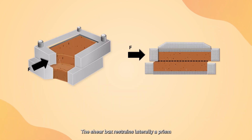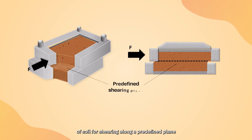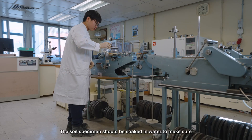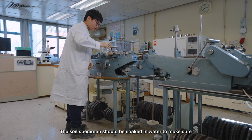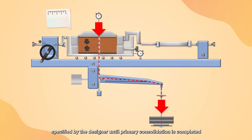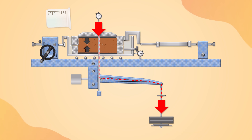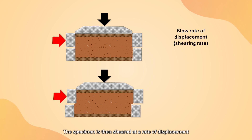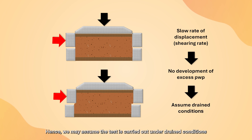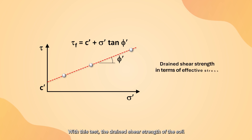The shear box restrains laterally a prism of soil for shearing along a predefined plane while a vertical stress is applied normal to that plane. The soil specimen should be soaked in water to make sure it is as saturated as possible. Then, the specimen is consolidated under a vertical stress specified by the designer until primary consolidation is completed. The specimen is then sheared at a rate of displacement low enough to prevent development of excess pore water pressure. Hence, we may assume the test is carried out under drained conditions, and the drained shear strength of the soil in terms of effective stresses is obtained.